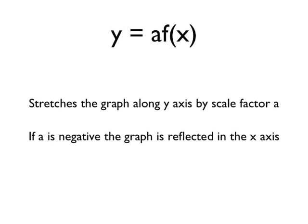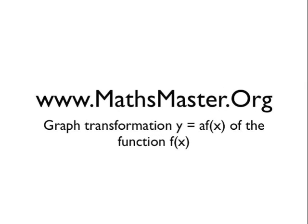Just to recap: the graph transformation a times f of x stretches the graph along the y-axis — the vertical axis — by a scale factor of a. So if a equals 2, the graph is stretched along the vertical axis by a factor of 2. If a is negative, the graph is reflected in the x-axis. That was the graph transformation y equals a times f of x. If you want to see more great maths videos, please visit mathsmaster.org.